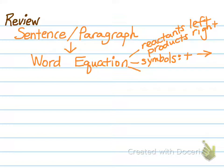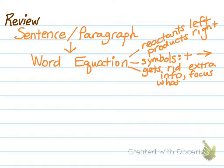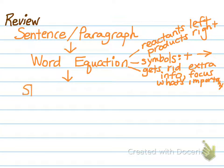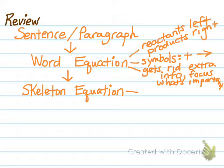Remember, the purpose of our word equation is that it gets rid of extra information that's not particularly important for balancing our equation, and it allows us to focus on what's important. The only symbols in a word equation are those plus signs and arrows. We're getting rid of extra information like 'oxygen gas from the air' — we can get rid of 'gas' and 'from the air.'